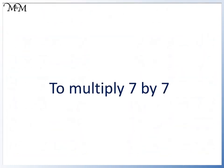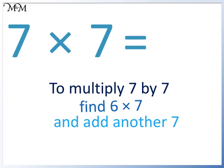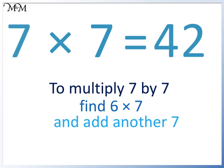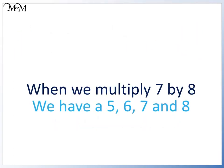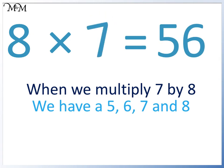To multiply 7 by 7, we find 6 times 7 and add another 7. 6 times 7 equals 42; adding 7 equals 49. When we multiply 7 by 8, we have 5, 6, 7 and 8: 8 times 7 equals 56. We have 5, 6, 7, 8.